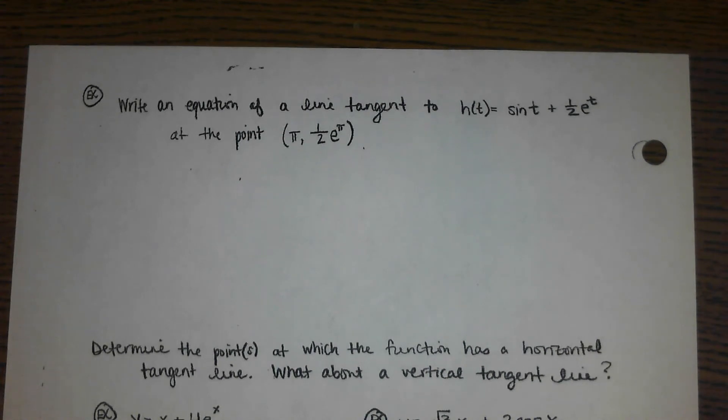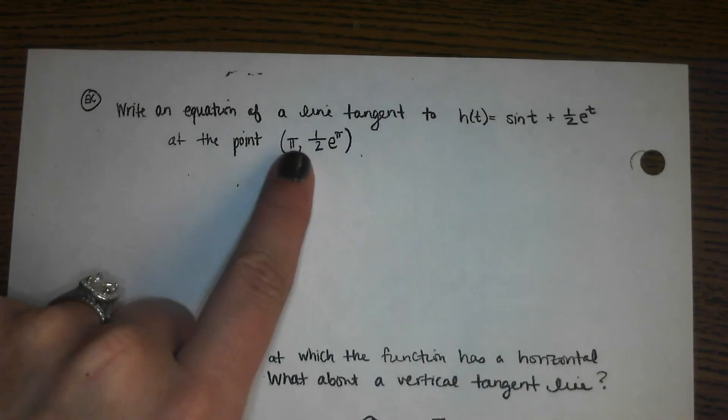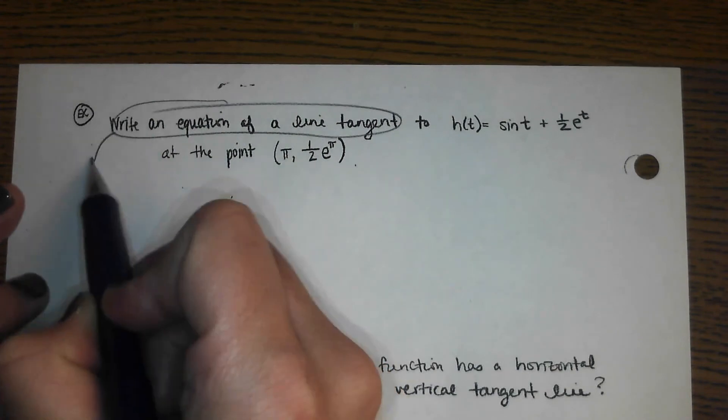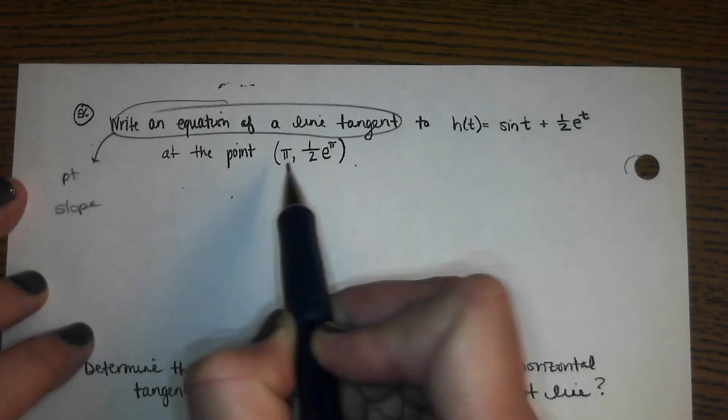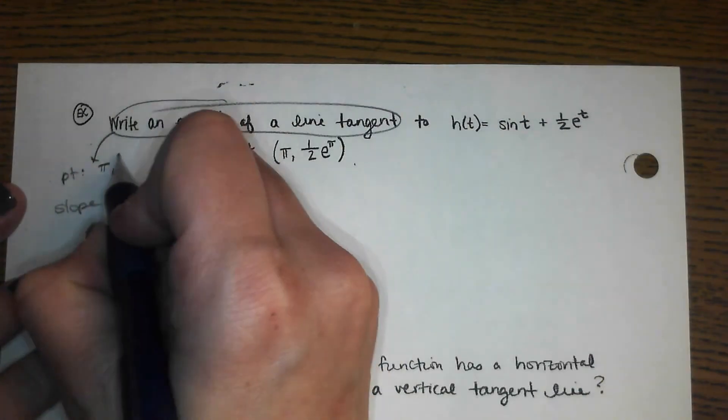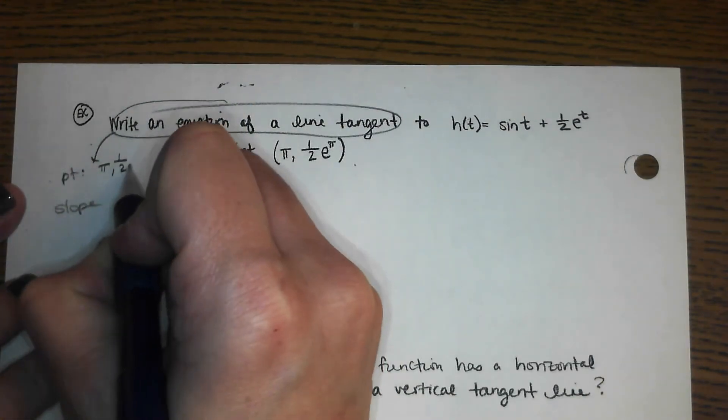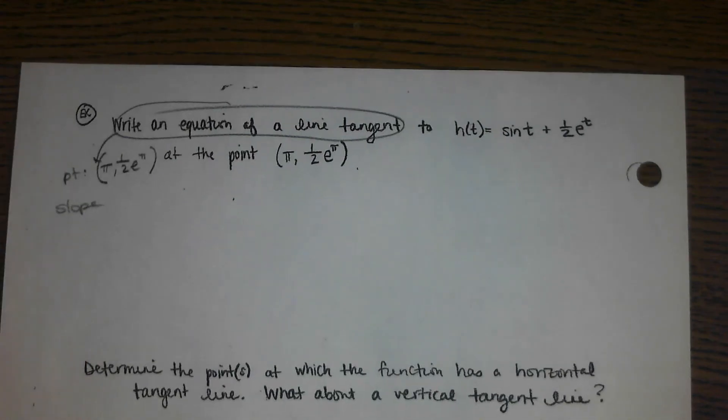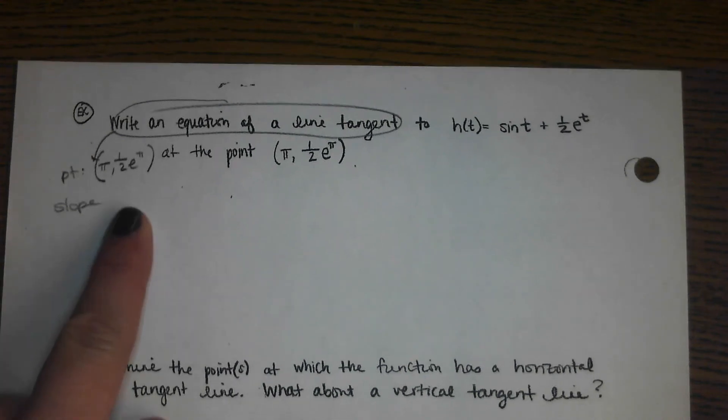Write an equation of a line tangent to this at this point. So if we're writing the equation of a line, we need a point and we need a slope. Well, they already told us the point, so that's a no-brainer. Pi comma one-half e to the pi power. It's not a pretty point, but it's a point. And we need the slope of a tangent line at that location, which tells us we need our derivative at that location so that we have a slope to use at that location.